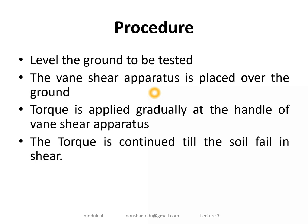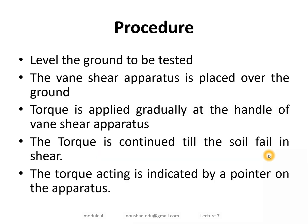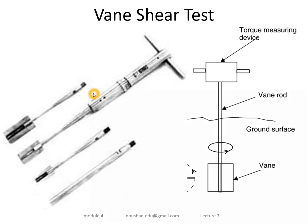We continue to apply the torque until the soil fails, and the torque at that point is indicated on the apparatus. The apparatus has a blade at the bottom and a handle at the top.